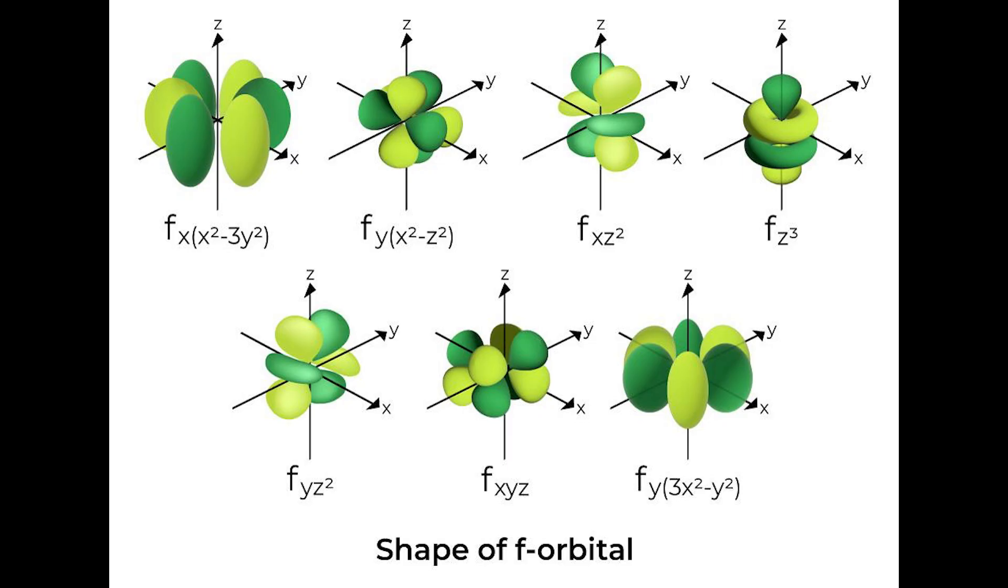Finally, we have the f orbitals. These orbitals show up at the fourth energy level and are the most complex in shape. There are seven f orbitals, and together they can hold up to 14 electrons. The f orbitals are critical for understanding the chemistry of rare earth elements and actinides.